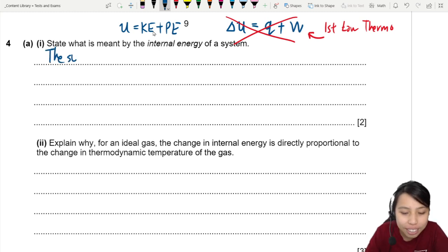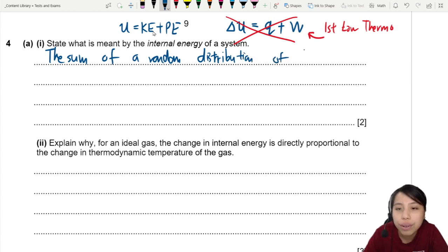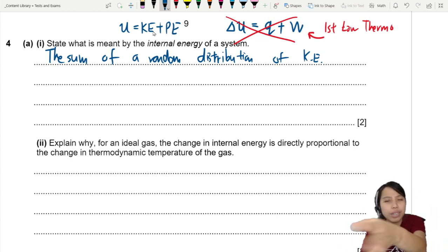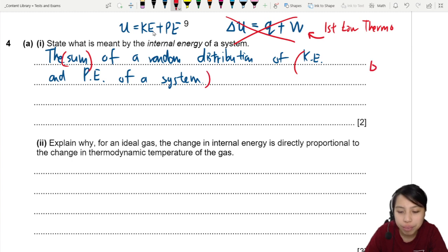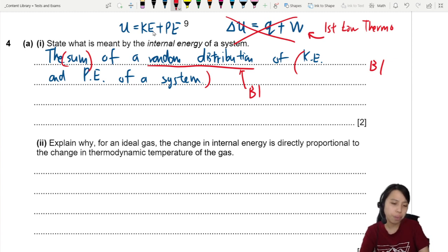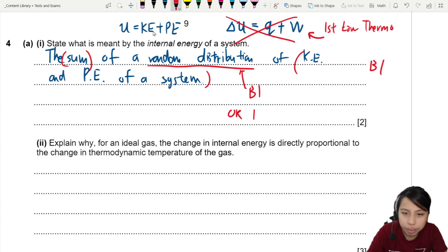So we say the sum of a random distribution of kinetic energy. I mean, if you can write out the whole sentence, write out KE. I'm shortcutting a bit here. Of KE and potential energy of a system. So I look for a sum of KE and PE of a system. That's one. The second idea can appear in many different forms. Sometimes they say random distribution, then this one is another mark. Sometimes the marking will say they're looking for particles in random motion. So I'm going to write here, random motion. Yeah, that works too.